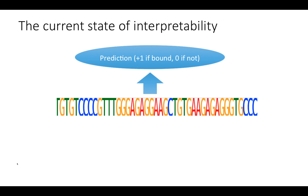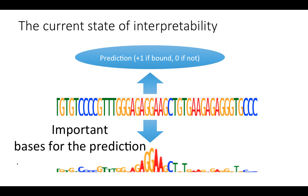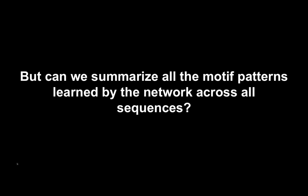So what is the current state of interpretability? If you have a DNA sequence and a prediction — plus one if the region is bound by the TF, and zero if it's not — you can interpret the sequence to get importance scores at individual bases, where a positive score means that base contributes to the binding of the TF, and a negative score means that the base contributes to inhibiting the binding of the TF. There are several methods to do this. DeepLIFT was developed by our lab, but there's also taking the gradients at the sequences, using integrated gradients, and so forth. But the challenge is really, can we summarize all the motif patterns learned by the network across all the sequences?